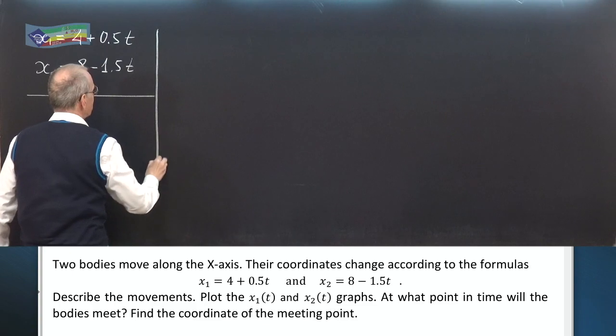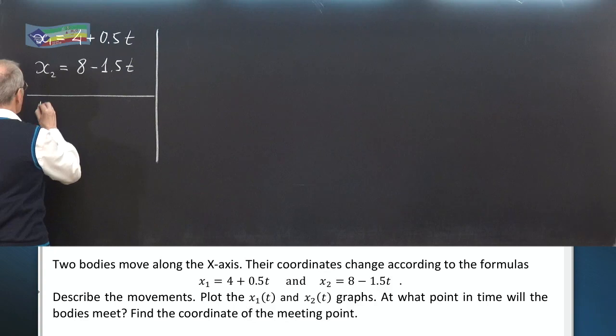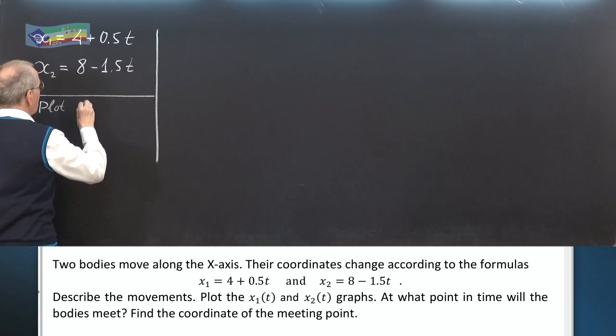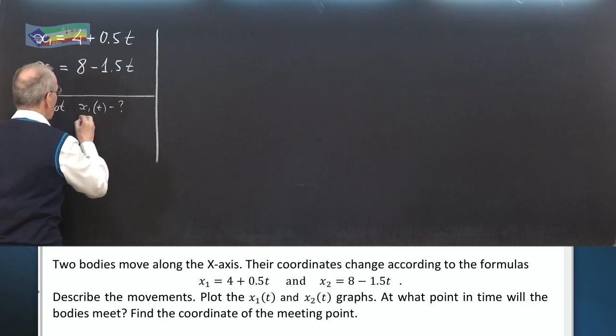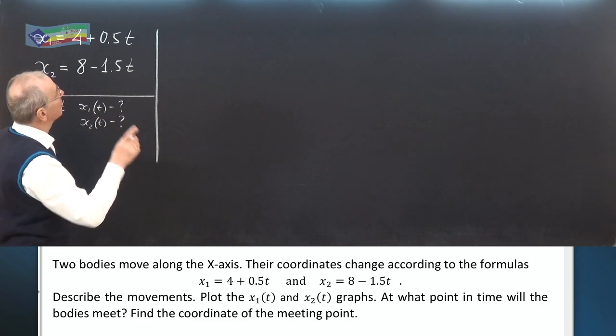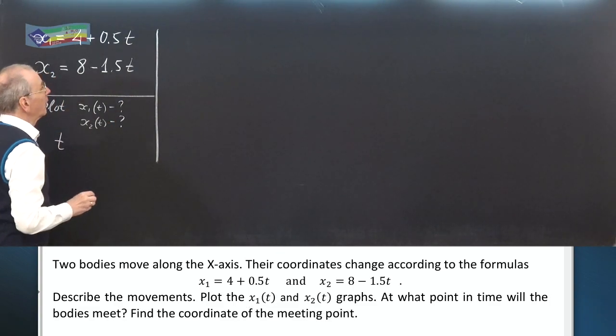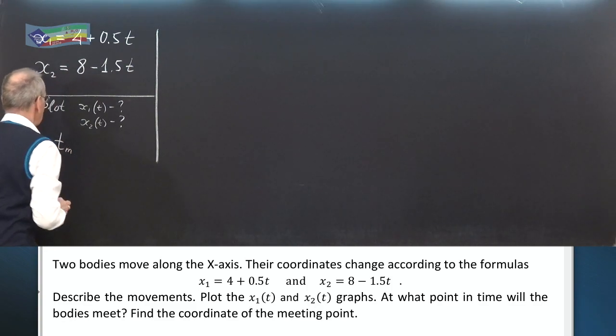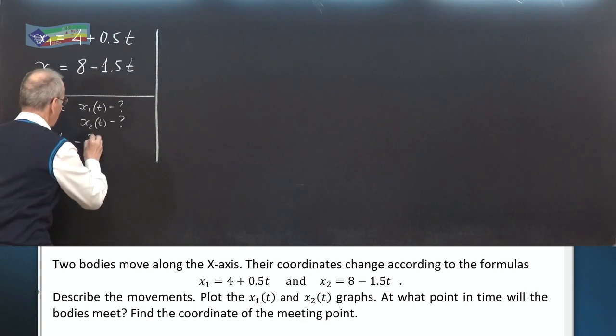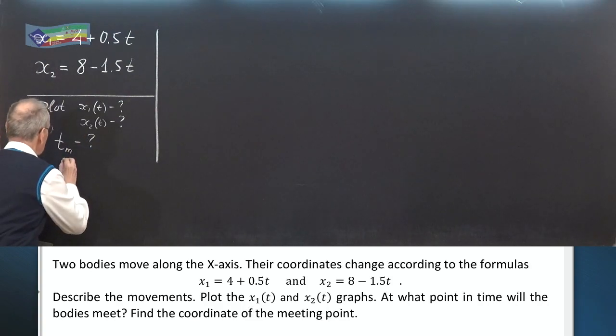We have to describe these motions and plot x₁ with respect to t, x₂ versus t, and find the point in time where bodies meet, time of meeting tₘ, and find the coordinate of the meeting point xₘ.